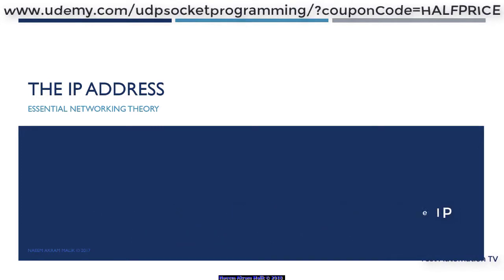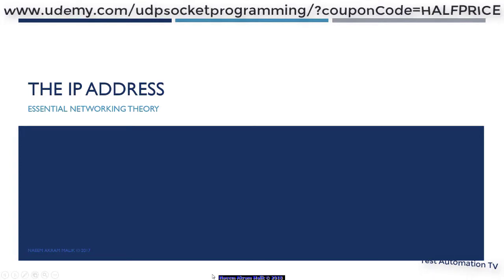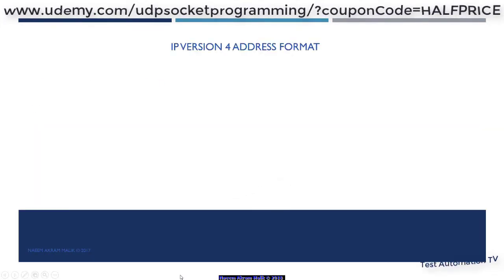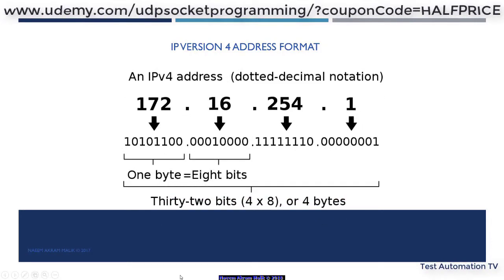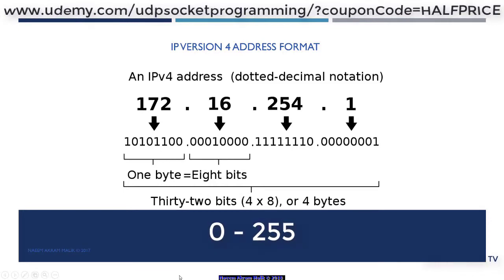We are going to use IP version 4, or IPv4, in this course. Another version of the IP specification is IPv6, which is catching up these days. An IPv4 address is a group of 4 separate 8-bit numbers, making the total length of an IPv4 address 32 bits. An individual number inside the IP address can have a value between 0 and 255.